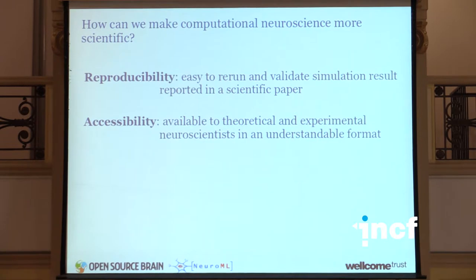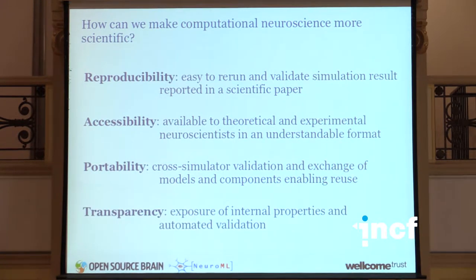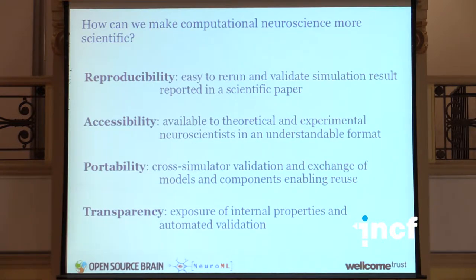Accessibility — it's not just computational neuroscientists we want looking at these models and improving them; we also want to make them accessible to theoretical and experimental neuroscientists. Portability — everybody uses their own simulator, maybe rebuilds the simulator, and it would be good if you weren't limited to the format the original model was built in. And transparency — for really complex models, you need to be able to drill down to the specifics without opening a text editor and reading thousands of lines of code. We want to expose internal physiological properties and make them open to critical evaluation.